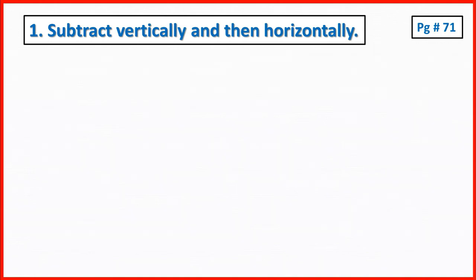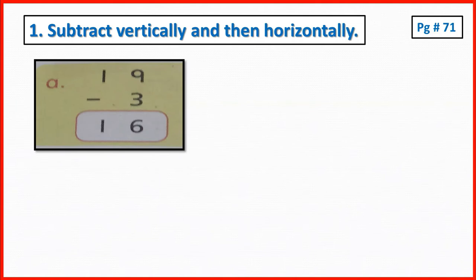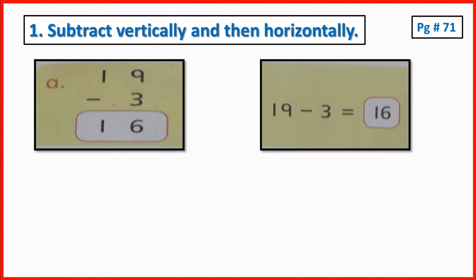First, I am going to do page number 71, question number 1: subtract vertically and then horizontally. One has been done for you. This is a vertical form: 19 minus 3. When 3 subtracts from 9, the number remains 6, and there is nothing to subtract from 1, so 1 remains the same. Now, subtract horizontally: subtract 3 from 19 and the number remains 16.